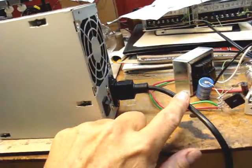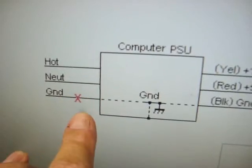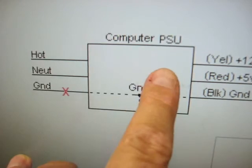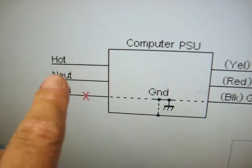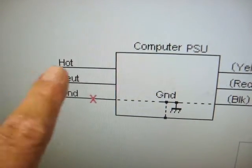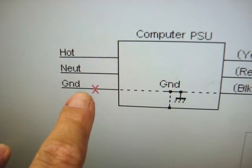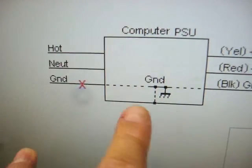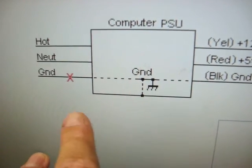The ground is connected here on the schematic. This shows the computer power supply unit—here's your hot and neutral, those connect to your normal power. But the ground, you do not connect that. The ground and chassis ground will be floated.